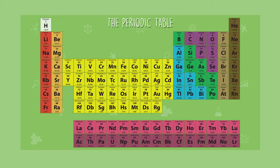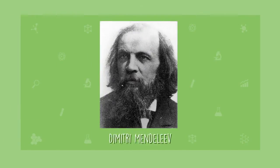The periodic table is a systematic arrangement of chemical elements. There have been many different forms of the periodic table, but the current one was published in 1861 by a Russian chemist called Dimitri Mendeleev. His table was better than its predecessors because it left gaps to account for elements that had not yet been discovered.